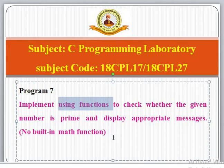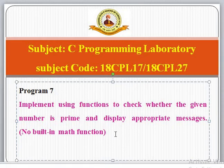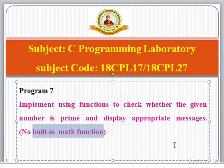This is a very interesting and important use of user-defined functions. Normally we have function main, which is a user-defined function — the only one in every C program. But in this case we are using one more function to check whether the given number is prime, and built-in math functions are not to be used.